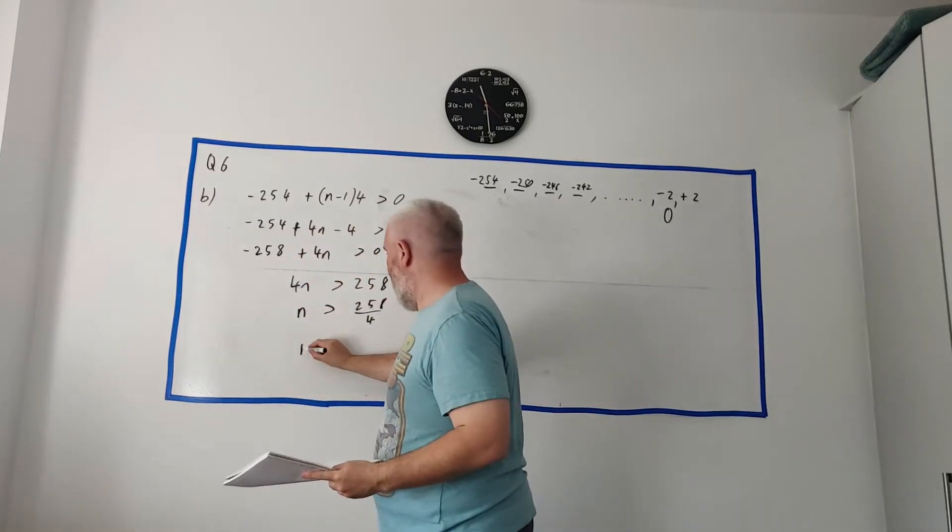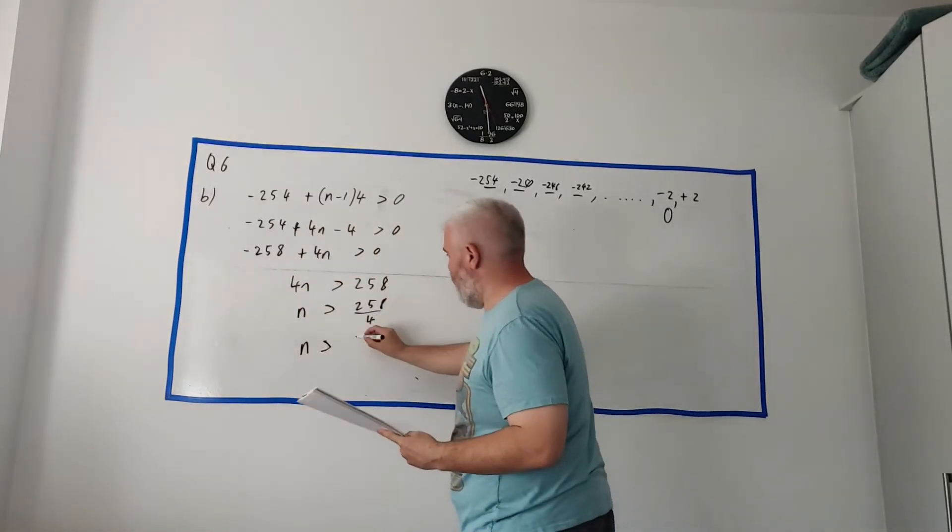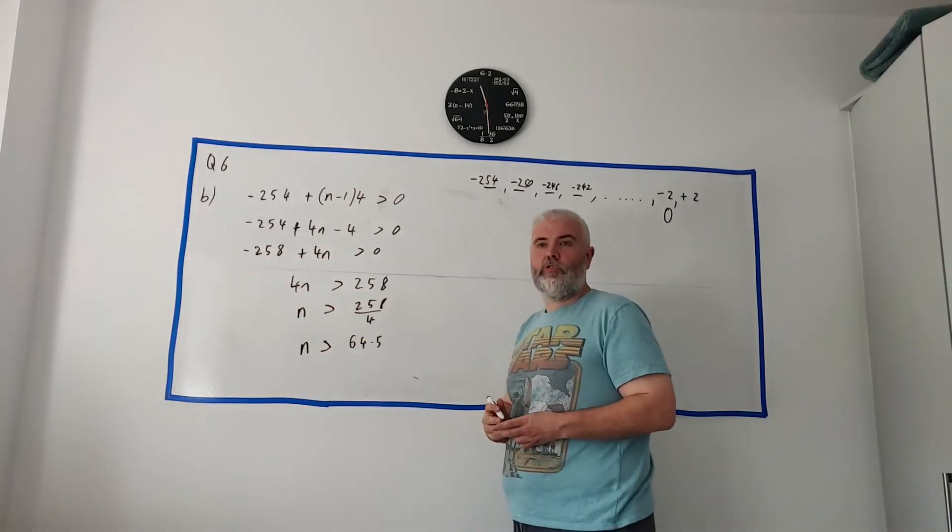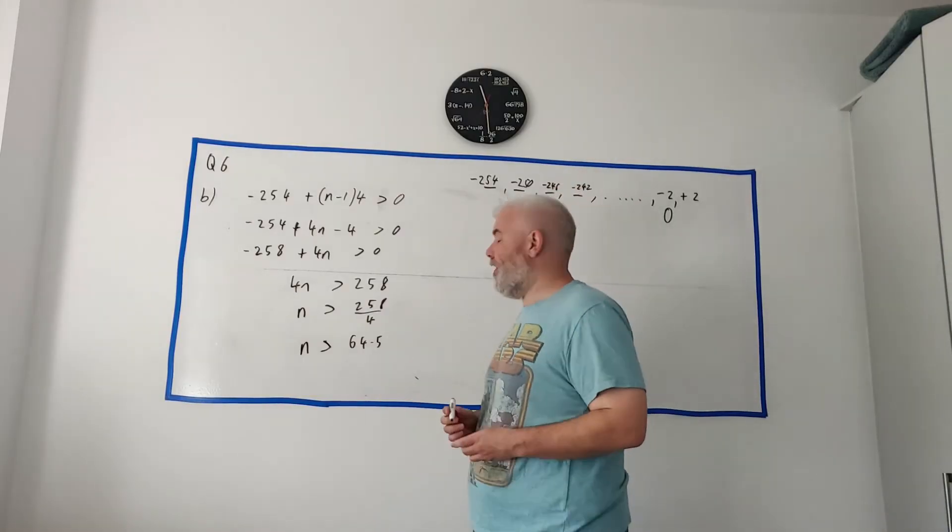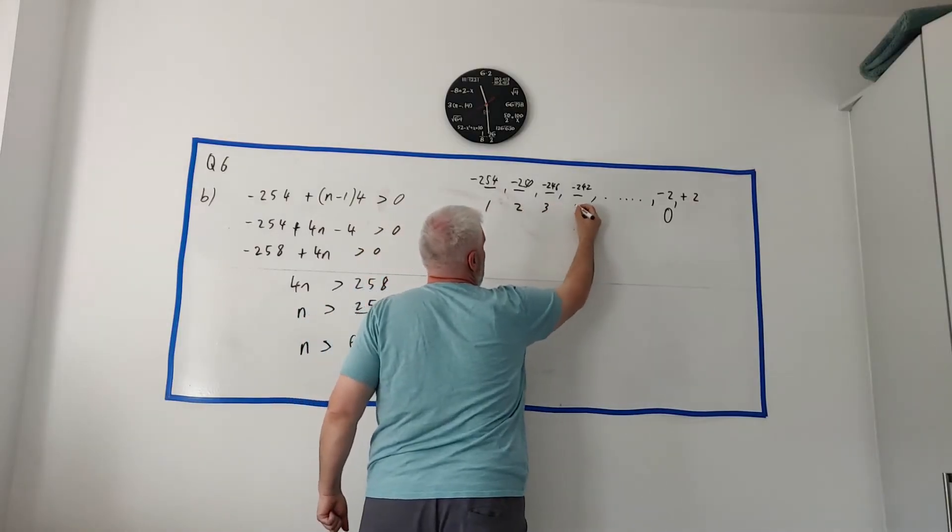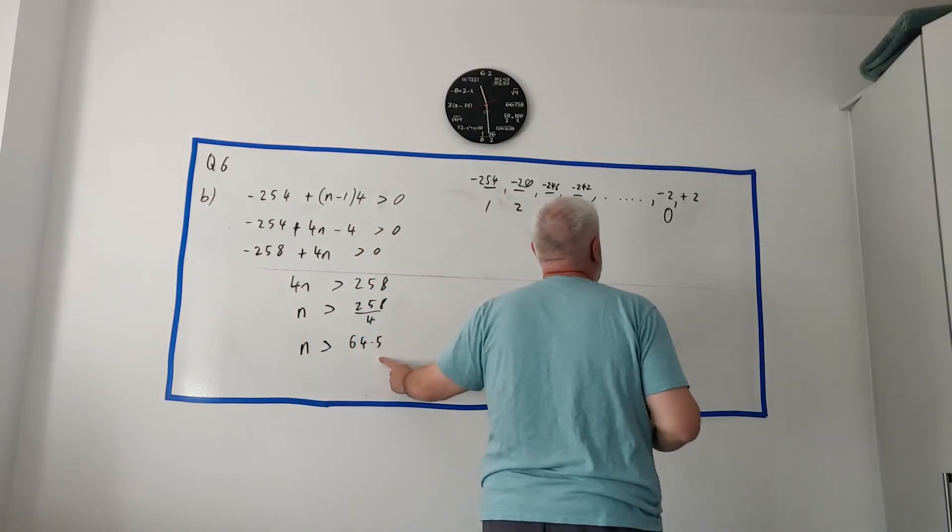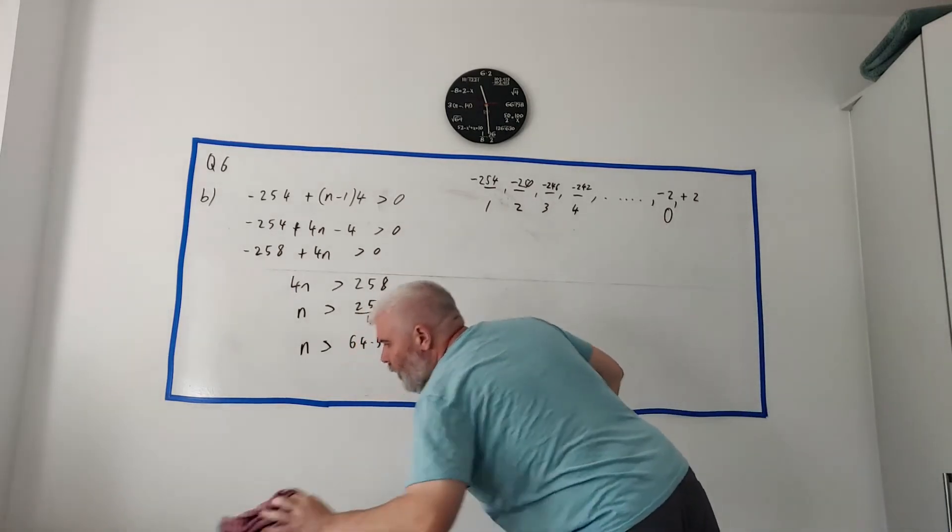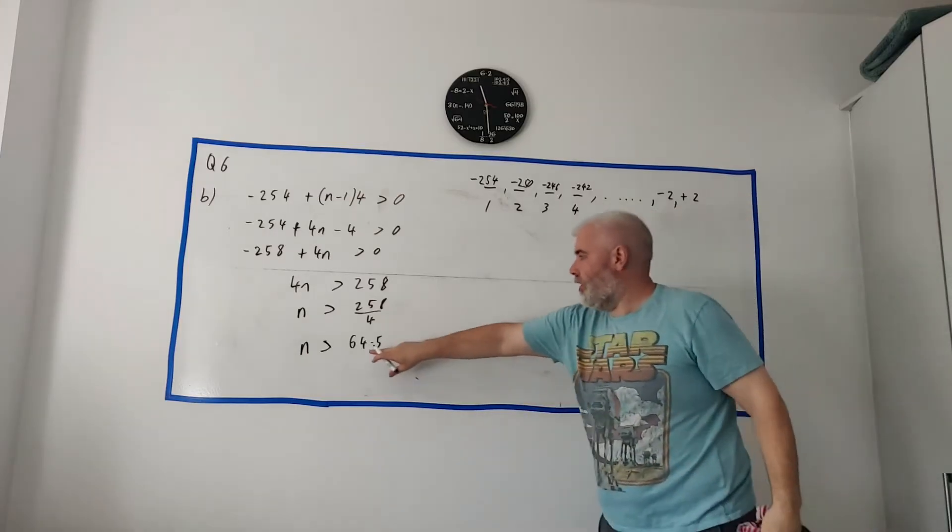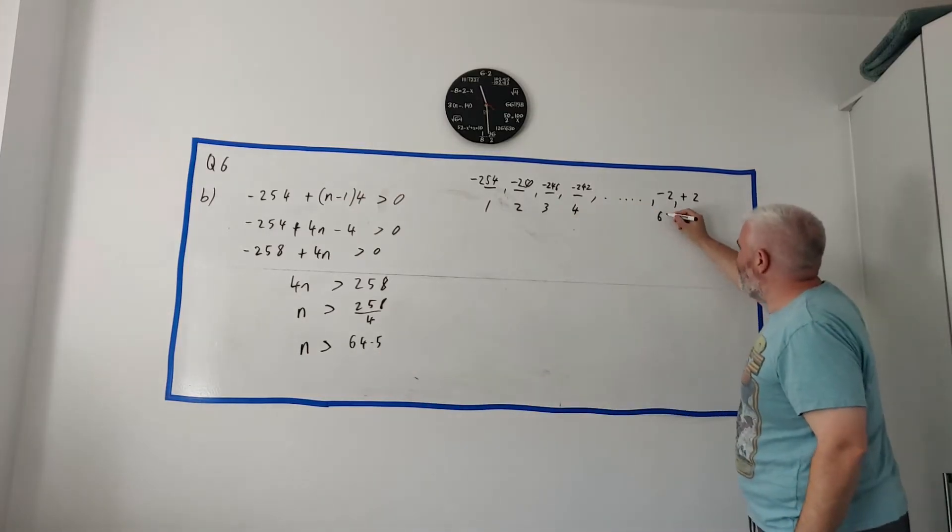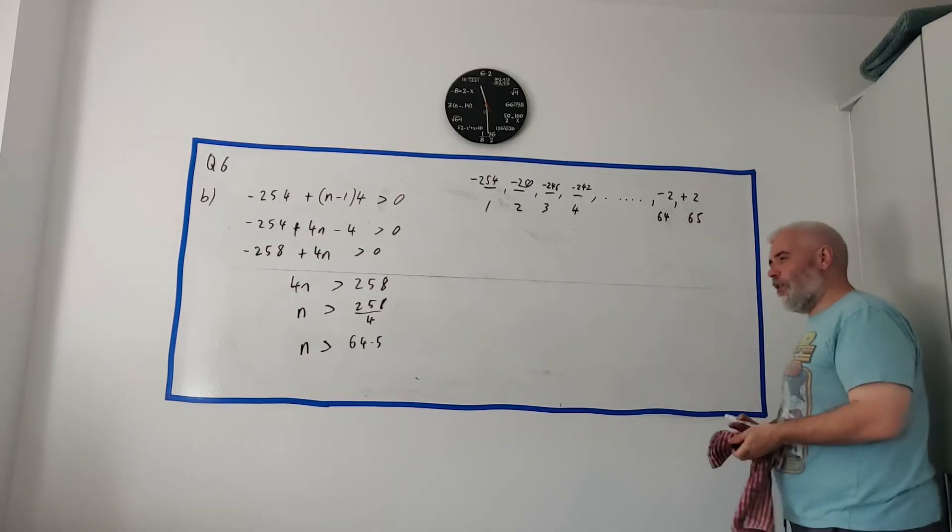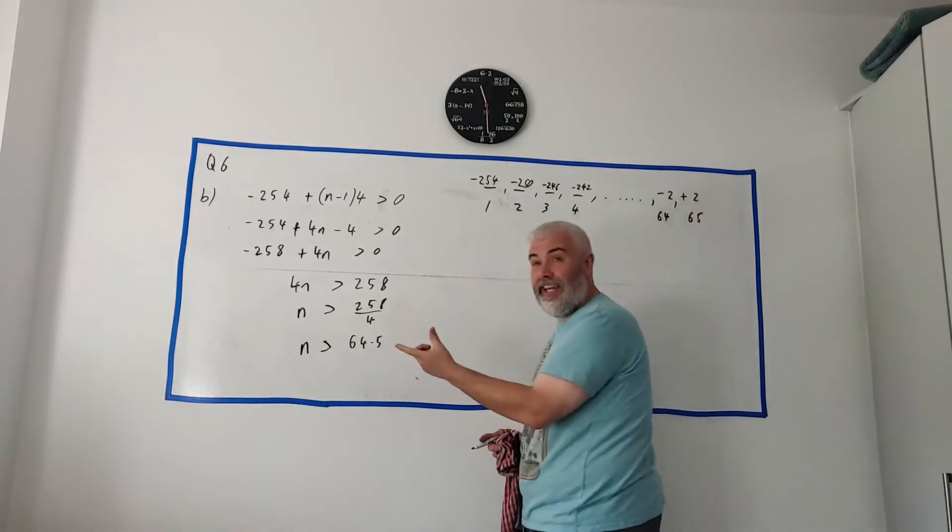Which n is greater than, what have I got here, 64.5. Now, lots of students will make a mistake now. They'll leave this as their answer. No, this is the first term, the second term, the third term, the fourth term. This tells us that when it crosses over the 0 point, it's bigger than 64.5. Well, then, that must be the 64th term and that must be the 65th term. That's what they're telling us there. This is terms. So, we can't have a half.